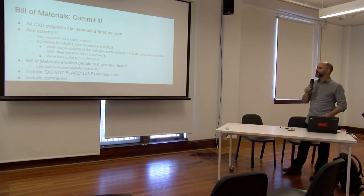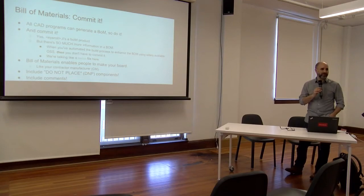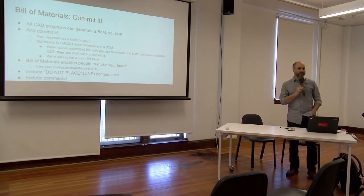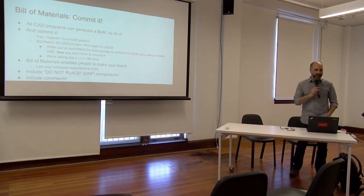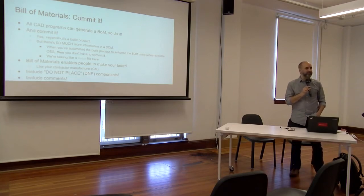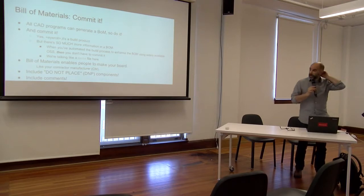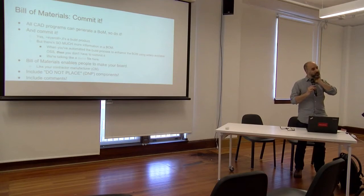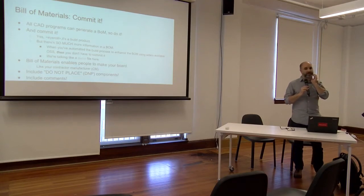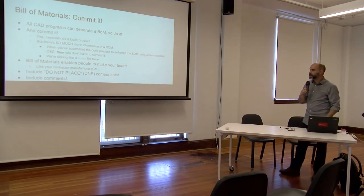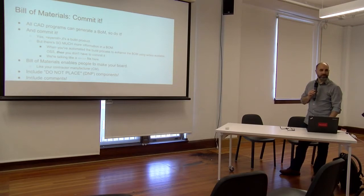The bill of materials enables people to make your board. Specifically, if you have a contract manufacturer making your board, you need the BOM — they're not going to dig into your source materials to pull out what R5 is. Most importantly, this also includes 'do not place' or 'no place' components. If they don't see a component on their board they may just assume. So make sure you've got the DNPs in there. And include comments — a description of what's important about that part.